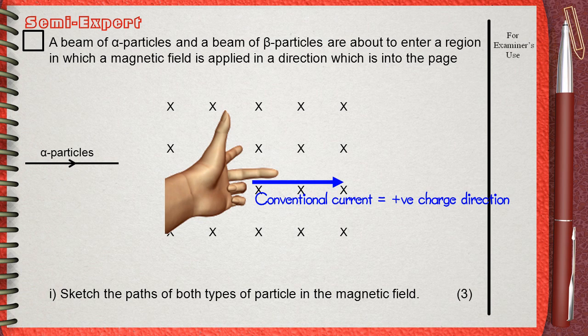In this case, it's for the positive charge direction because we don't have a wire. The first finger points to the direction of the magnetic field which is into the page. In this case, the thumb will show the direction of the force applied by the magnetic field on the moving positively charged alpha particles.